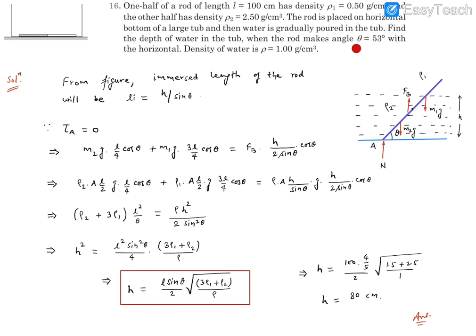So you'll find at θ angle which is 53 degrees, the rod will look like this. The denser portion will be on the downside, the lighter portion will be upside. Let's say the height of the liquid water is h, this angle is θ.